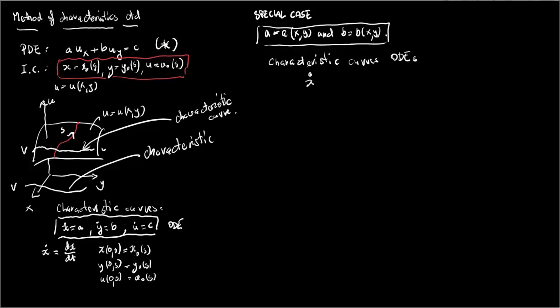We have dot x equals A of X,Y, dot y equals B of X,Y, and finally dot u equals C of X,Y,U. So if we look at these equations, we see that the first two decouple from the third. Why? Because variable U is not present in the first two equations. So what are these first two equations about?